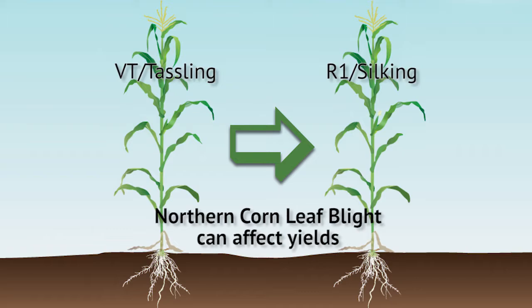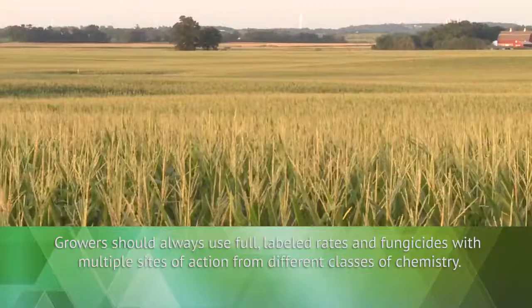Northern corn leaf blight can rob yields if it occurs during corn tasseling and silking development. In dry weather, the disease rarely occurs or does not spread enough to cause significant economic damage.